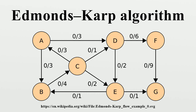In computer science, the Edmonds-Karp algorithm is an implementation of the Ford-Fulkerson method for computing the maximum flow in a flow network in O time. The algorithm was first published by Yefim Dinic in 1970 and independently published by Jack Edmonds and Richard Karp in 1972.